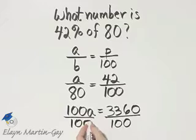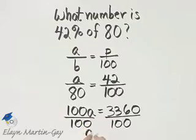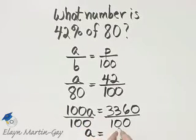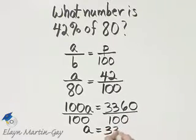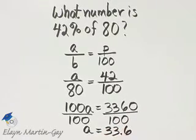And notice what happens then. I have 1A, or simply A, is equal to, if you divide by 100, you move the decimal point two places to the left, 33.6. That is your unknown amount.